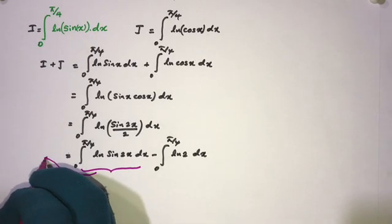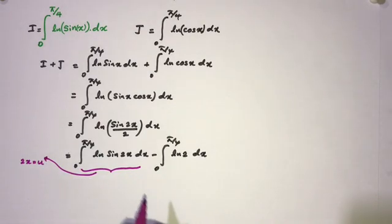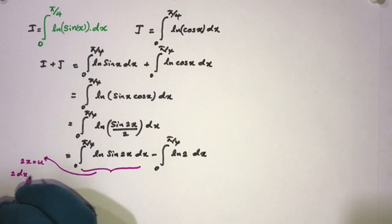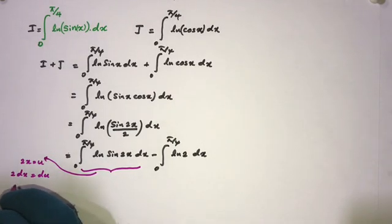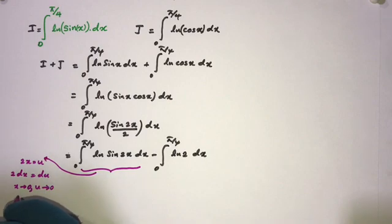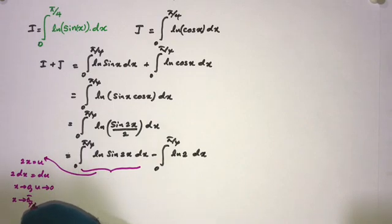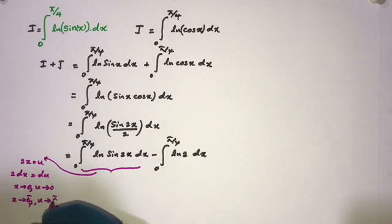For the ln(sin 2x) integral, I will use the substitution method. Let u = 2x, so 2 dx = du. The lower limit: when x approaches 0, u approaches 0. For the upper limit, when x = π/4, u = π/2.